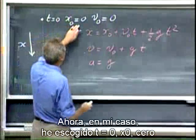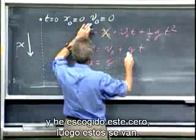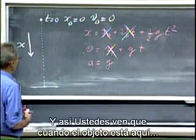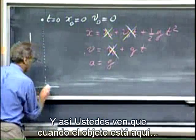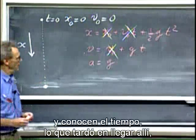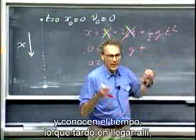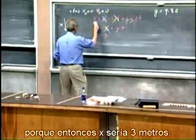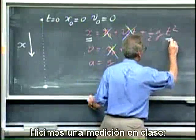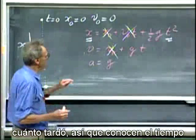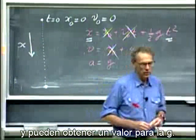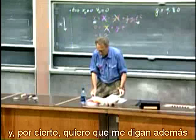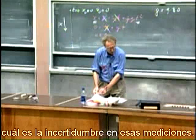In my case I have chosen t equals zero, x zero is zero, and v zero is zero, so those terms drop out. When the object is three meters below the starting point, and you know the time it took to get there, you can calculate g. Because x would be three meters when it's there — we made a measurement in class how long it took, so you know the time — and so you can come up with a value for g. You can do that for both measurements, and of course I want you to tell me what the uncertainty is in those measurements.